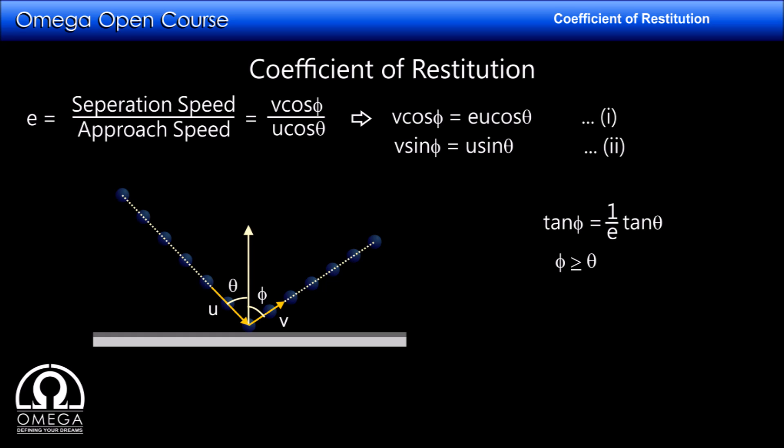If the collision is perfectly elastic, v equals u and phi equals theta. In the case of a perfectly inelastic collision, the separation speed will be 0 and the ball will not bounce; instead it will move along the floor with speed u sin theta.